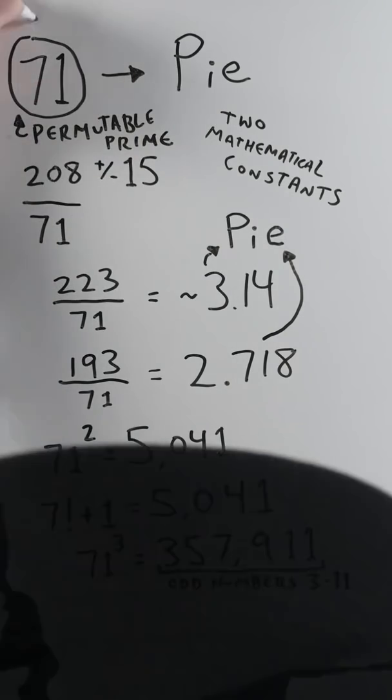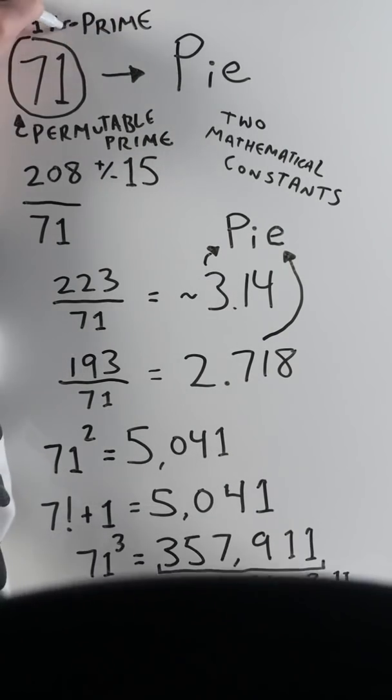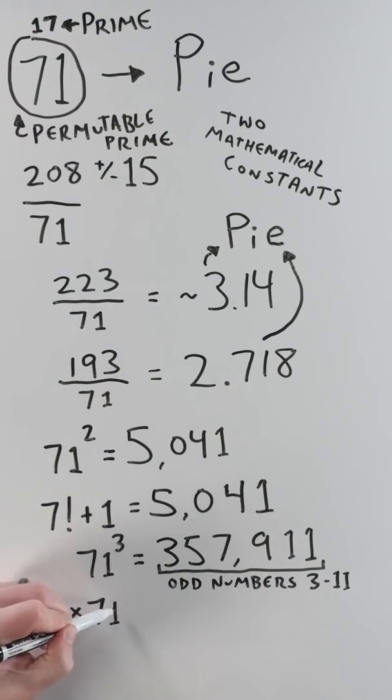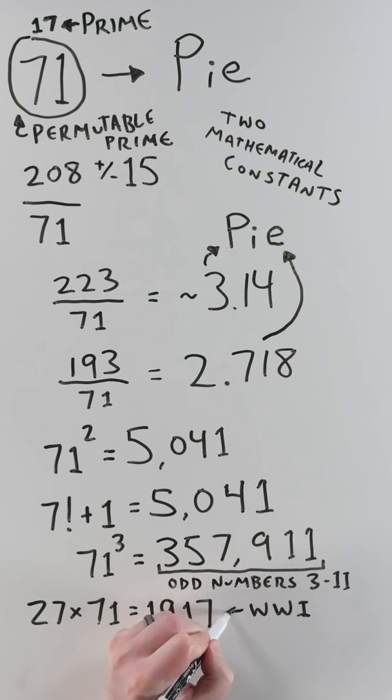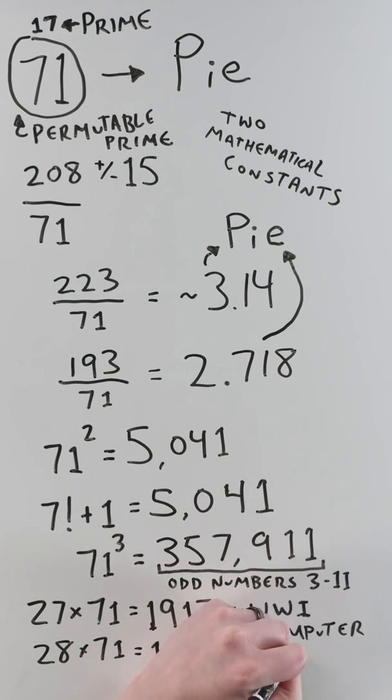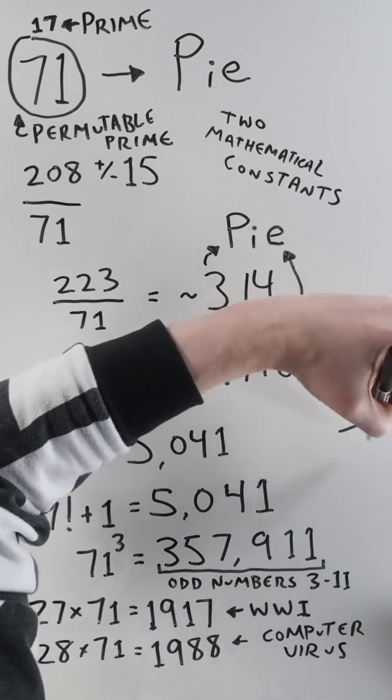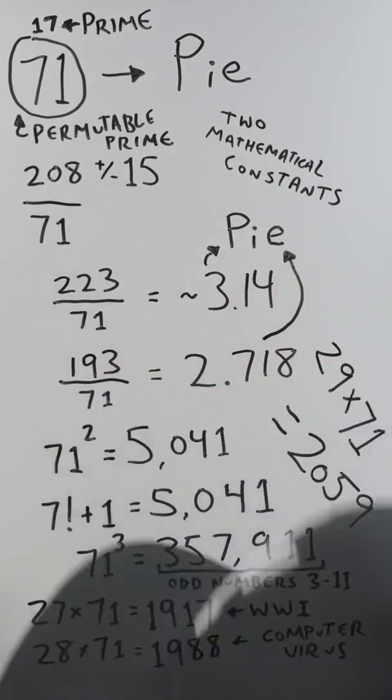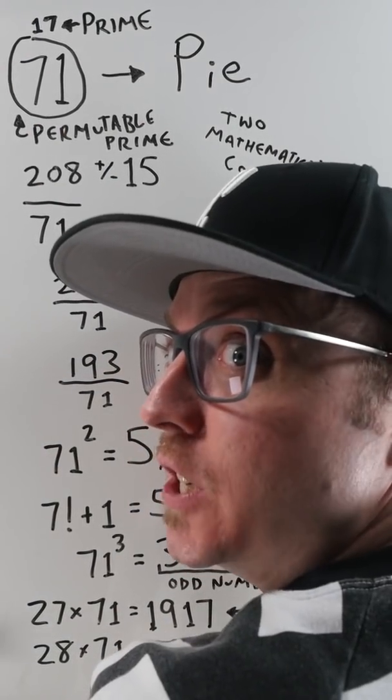It's a permutable prime, so swapping its digits to 17 is also prime. And 27 times 71 equals 1917, when the U.S. first entered World War I. And 28 times 71 equals 1988, when the first internet-based computer virus happened. And 29 times 71 equals 2059. And guess what happens in 2059? Mine.